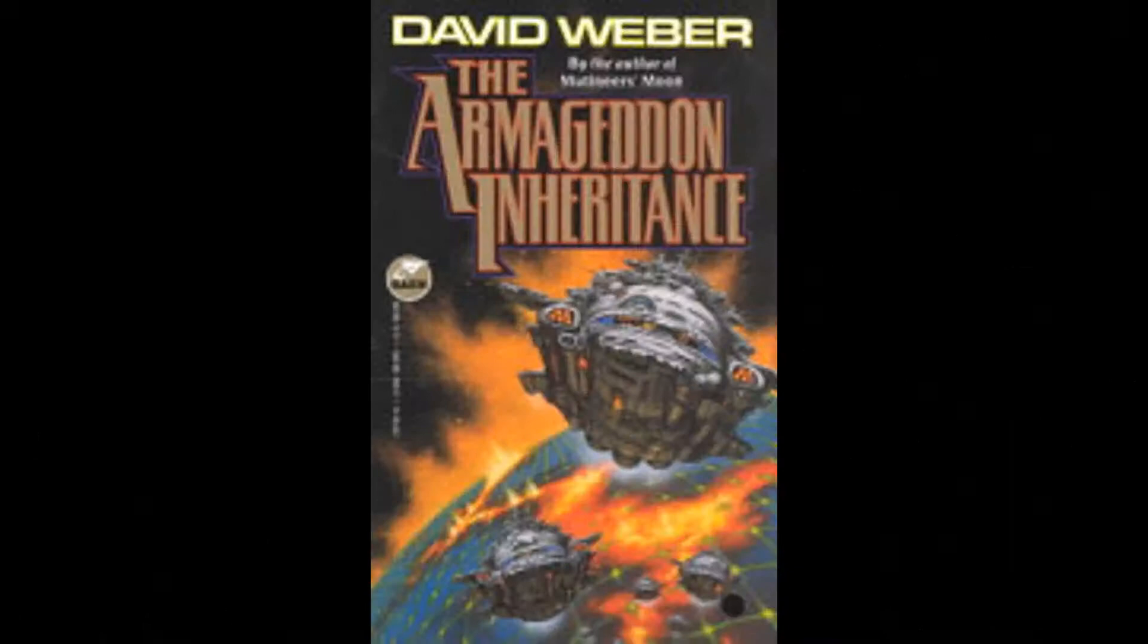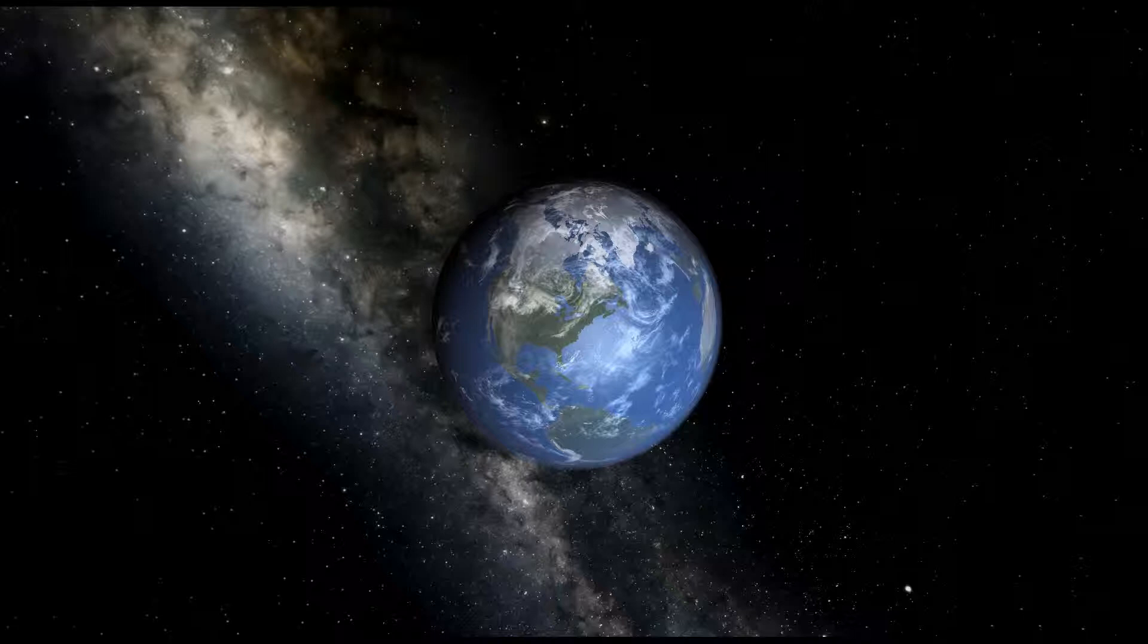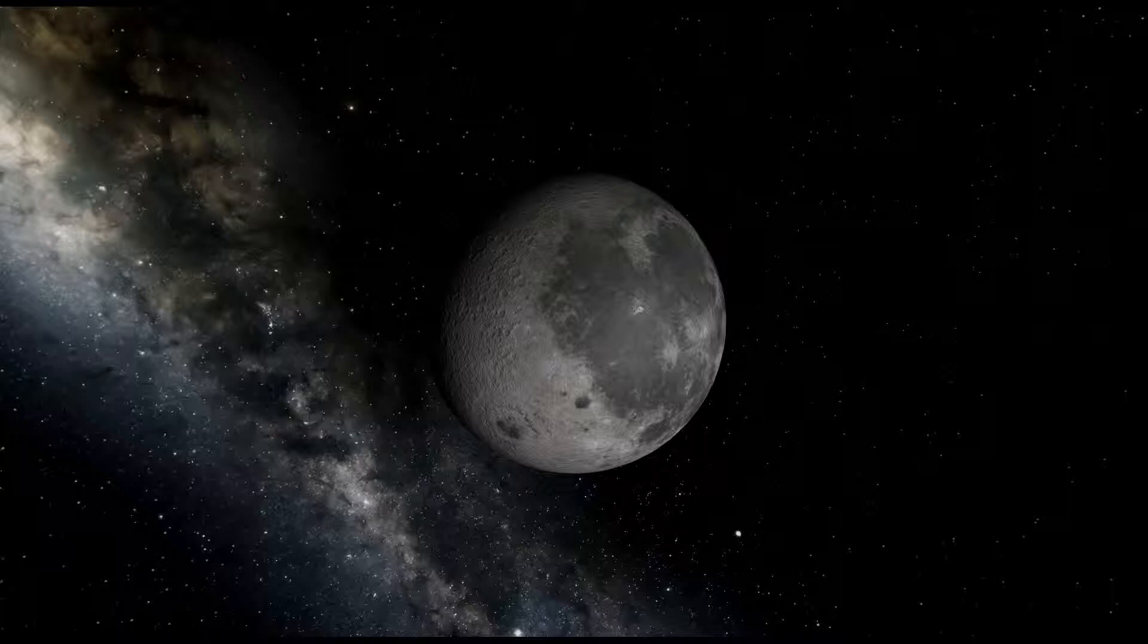The Armageddon Inheritance begins where the last book ended. The mutineers have been defeated, and most of Earth's governments have collapsed. Colin McIntyre has made himself governor of Earth, backed by Dahak's imperial weapons. An old imperial scanning network has warned that the aliens, called the Achuultani, are two years away from Earth. Colin heads to the heart of the empire to get what help he can to come defend Earth. He leaves Horus, a mutineer turned loyalist, in charge of preparing Earth for the fight against the Achuultani.